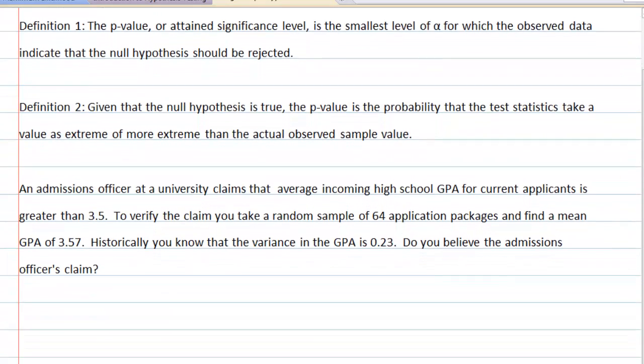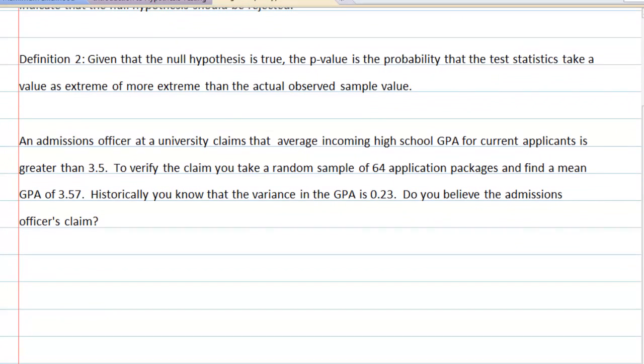To help understand these definitions, we're going to use an example we've used in previous videos. An admissions officer at a university claims that the average incoming high school GPA for current applicants is greater than 3.5. To verify the claim, you take a random sample of 64 application packages and find a mean GPA of 3.57. Historically, you know that the variance in the GPA is 0.23. Do you believe the admissions officer's claim?